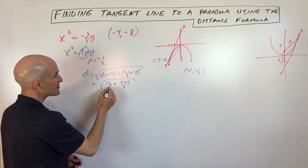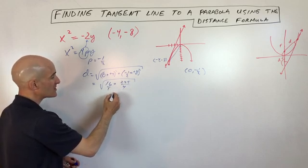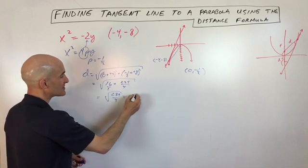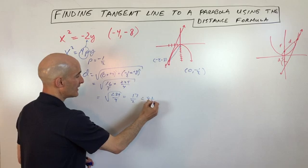And if we get common denominators here, this is 64 fourths plus 225 fourths is 289 fourths. And if we take the square root of that, we're going to get 17 over 2, which is 8 and a half.